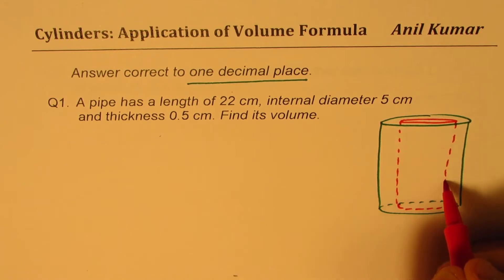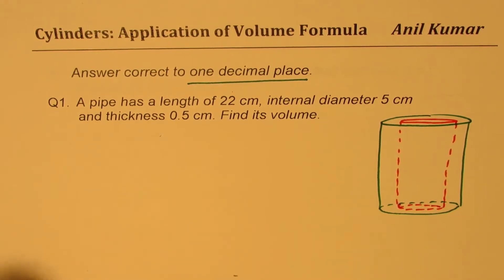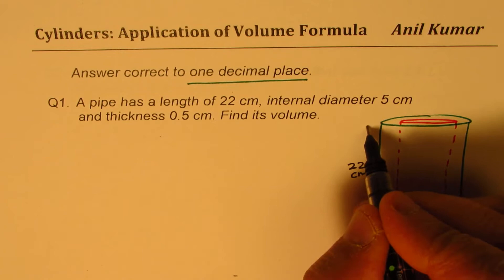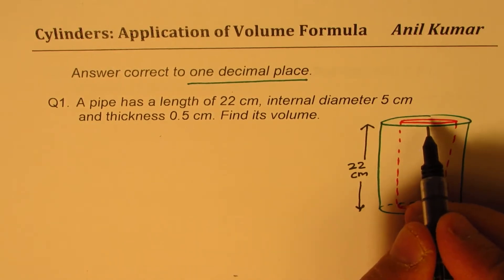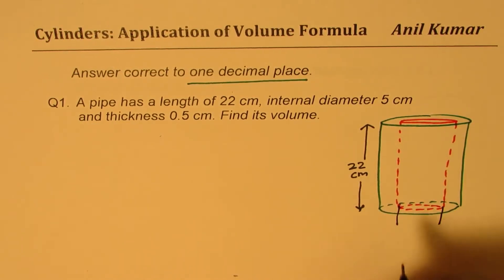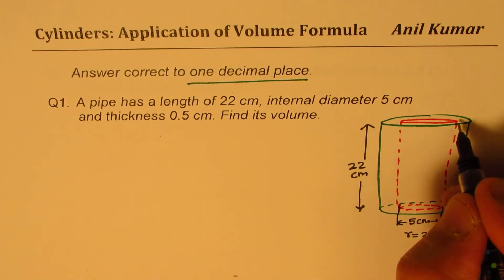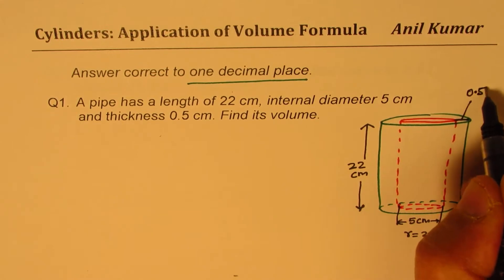So it's a hollow pipe. What we are given here is that the length is 22 centimeters — we'll consider length and height as the same. Internal diameter means this red area diameter — internal diameter is 5 centimeters, so internal radius is 2.5 centimeters. We are also given that this thickness, from here to here, is 0.5 centimeters.